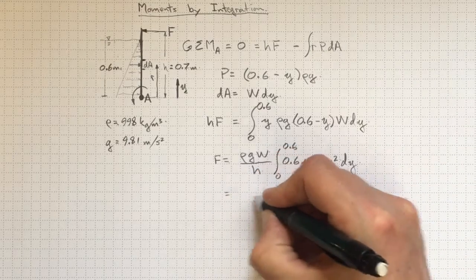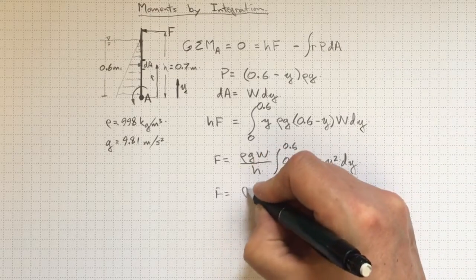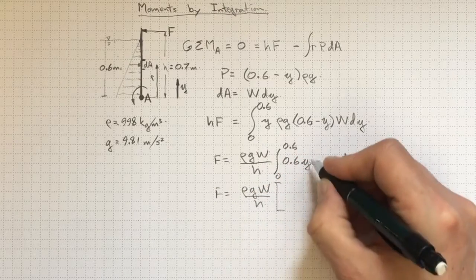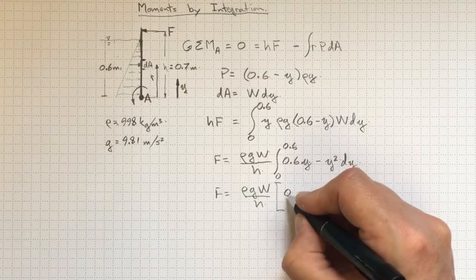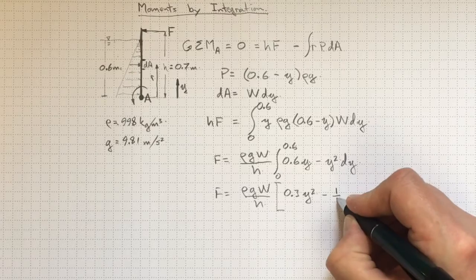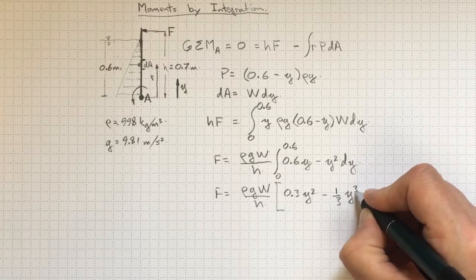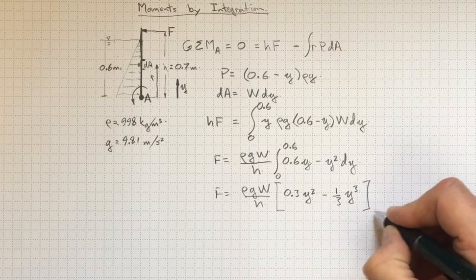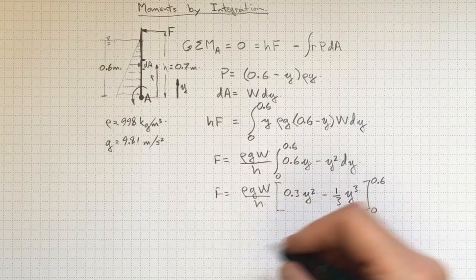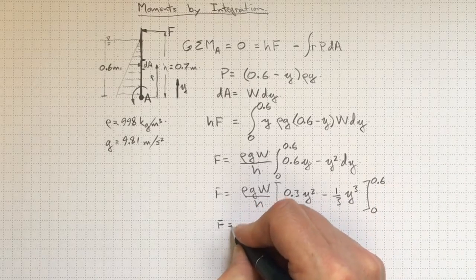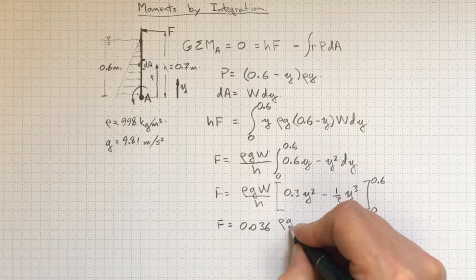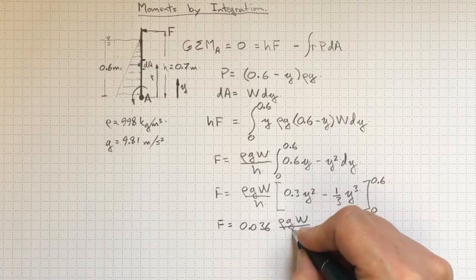I'll wind up then with F equal to rho g W over H. Integrating, this will be 0.3 Y squared minus one third Y cubed, evaluated at Y equals zero and Y equals 0.6. And if I punch that in, I'll wind up with a force equal to 0.036 rho g W over H.